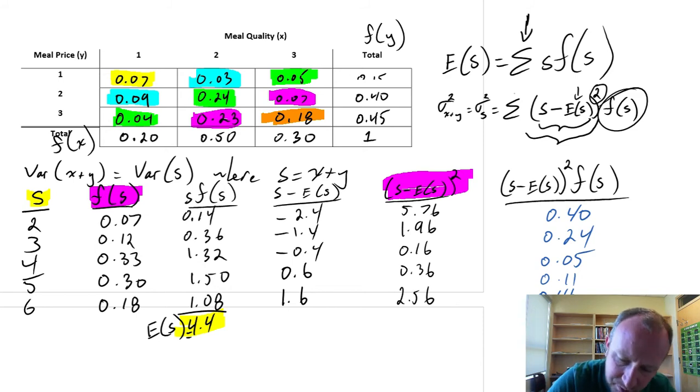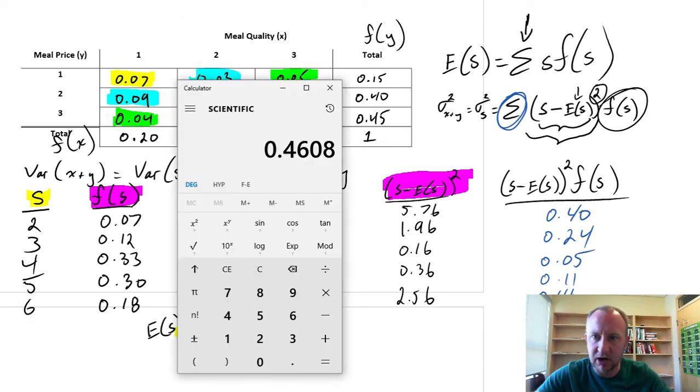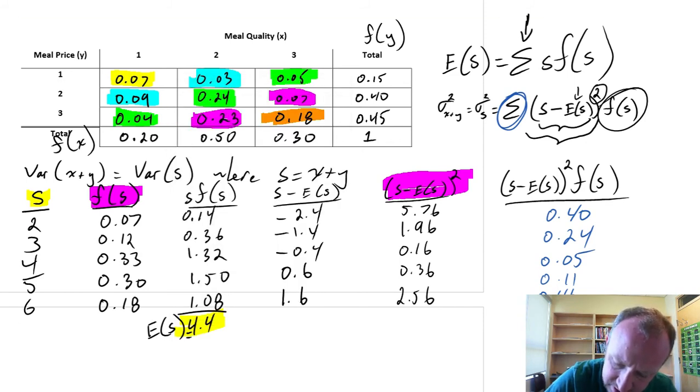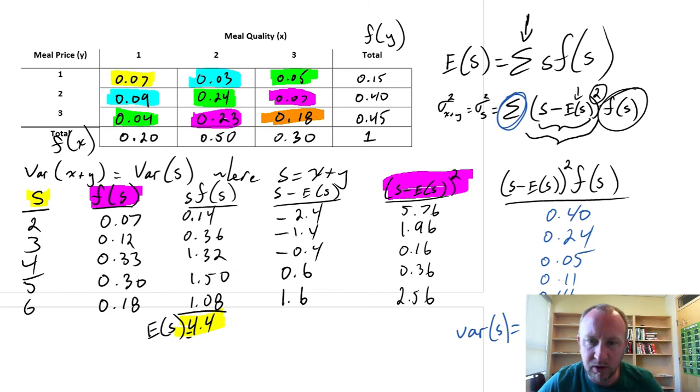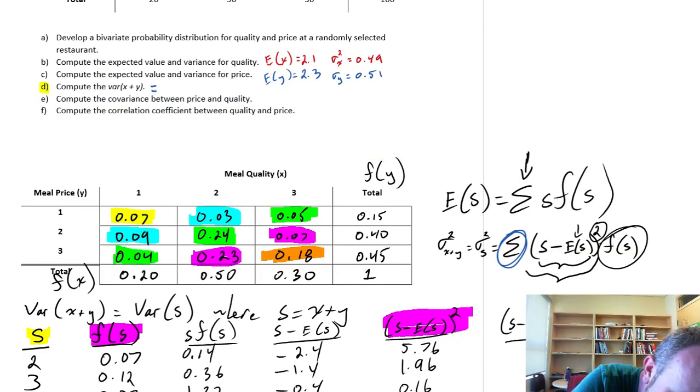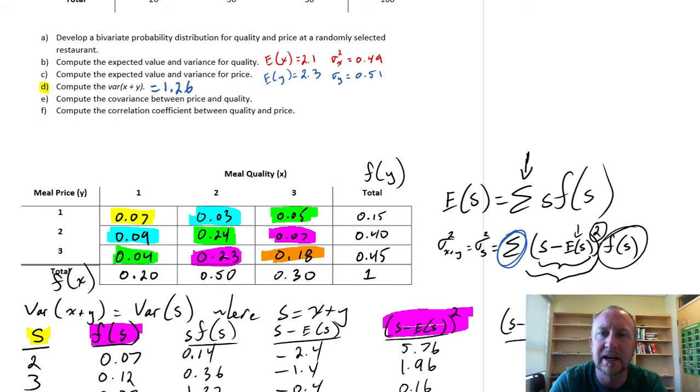And now, our last step, we apply this summation sign. So we just need to add all of these values together. So I'll start at the bottom, as I've already got 0.46 in my calculator, plus 0.11 plus 0.05 plus 0.24 plus 0.4 equals 1.26. So that's our variance of s, which is our variance of x plus y, 1.26. So we've got the next big step done.